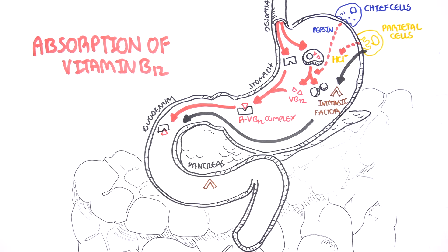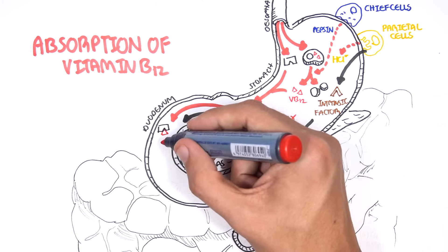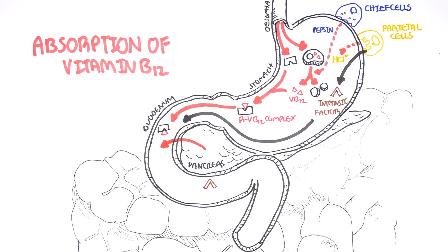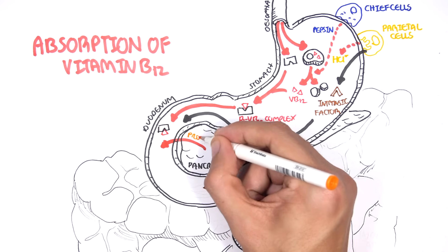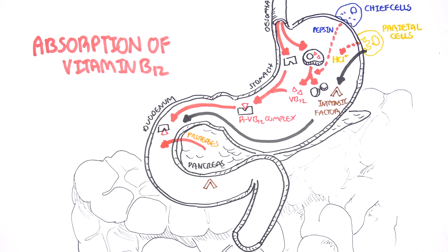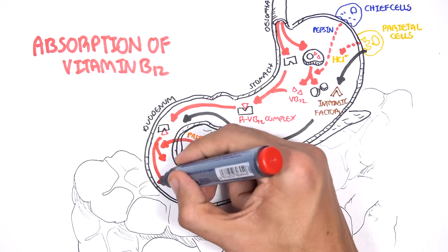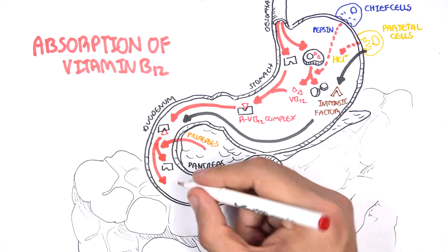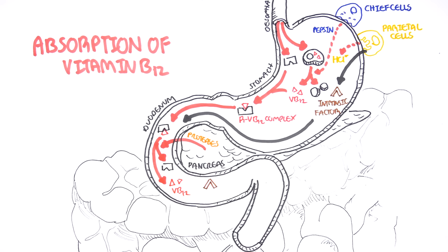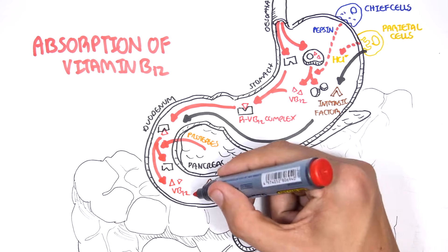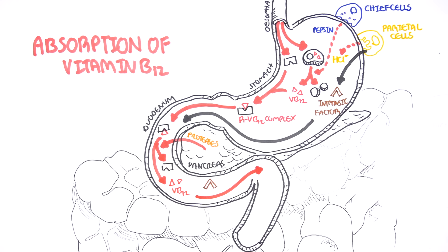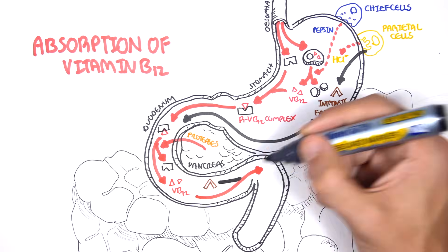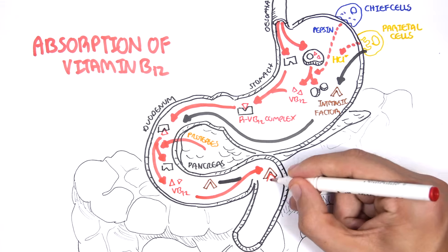Now, within the small intestine, the pancreas secretes its juices, the amylases, the lipases, as well as proteases, which will break down protein. Proteases break down the R-binder, which will liberate the vitamin B12 once again. In the small intestine, the liberated vitamin B12 has affinity for the intrinsic factor, and so they form the vitamin B12 intrinsic factor complex.